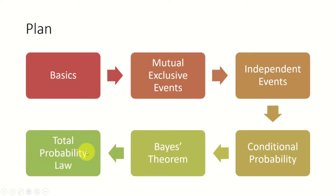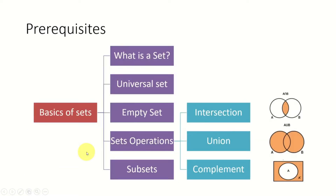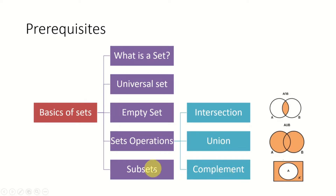And then we will move on to the statistics aspect. The prerequisite to understand this session is a basic understanding of sets. Let's quickly recap: a set is a collection of elements where no duplicate elements are allowed and the order of elements is not important. You must know what a universal set is — the universal set is a set that contains the total interested context. An empty set is a set containing no elements. You must know the basic set operations like intersection, union, and complement. And finally, you must know what is meant by subset — A is a subset of B if all the elements in A are also elements in B.